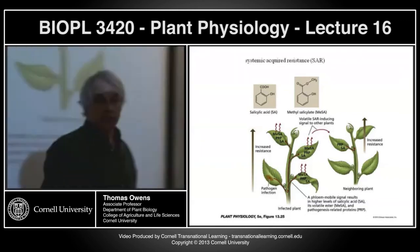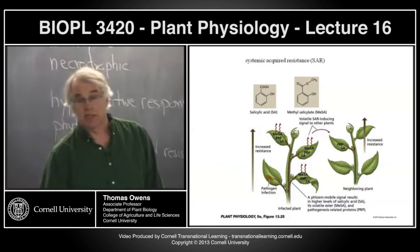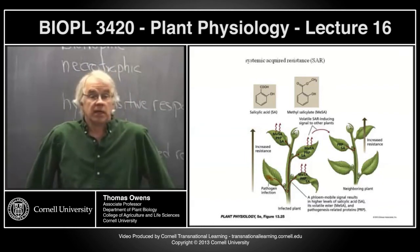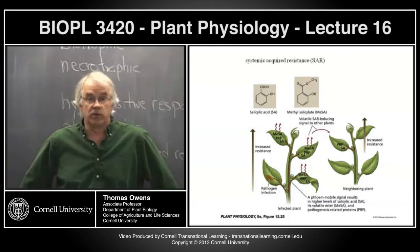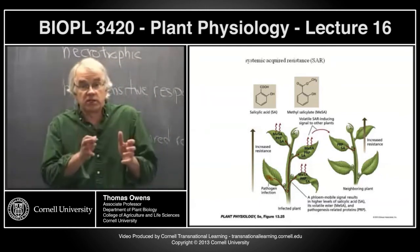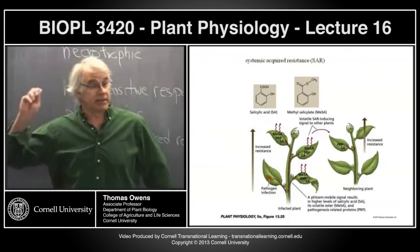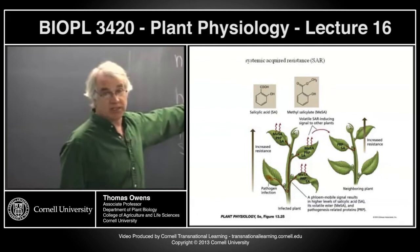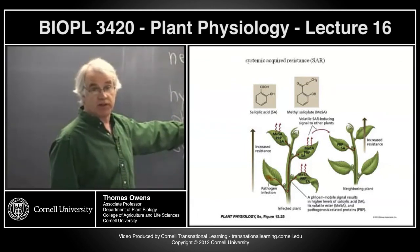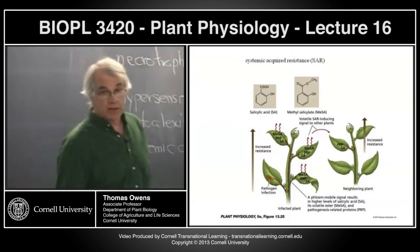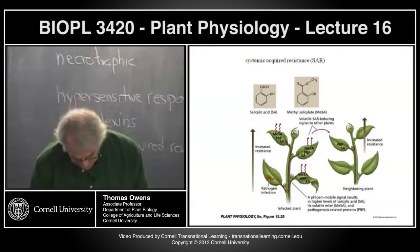The molecule that mediates systemic acquired resistance is salicylic acid, which we discussed as a secondary product in the benzoic acid family — it's a derivative of benzoic acid, closely related to acetylsalicylic acid, which is aspirin. Local production of salicylic acid and its transmission to the rest of the plant signals other tissues to turn on synthesis of phytoalexins and related compounds, preparing the plant for pathogens likely to attack other cells.